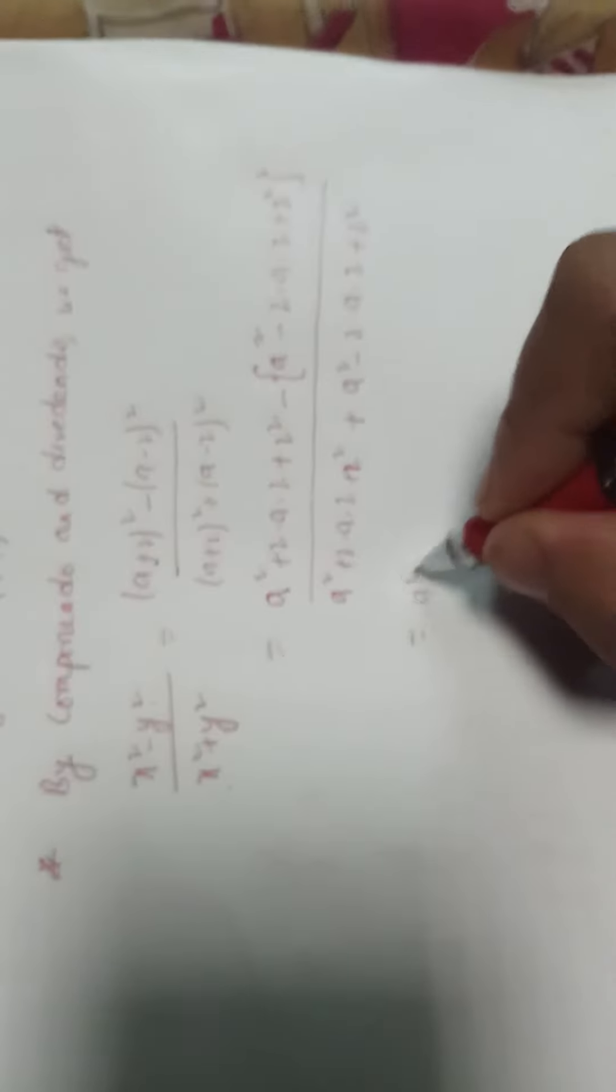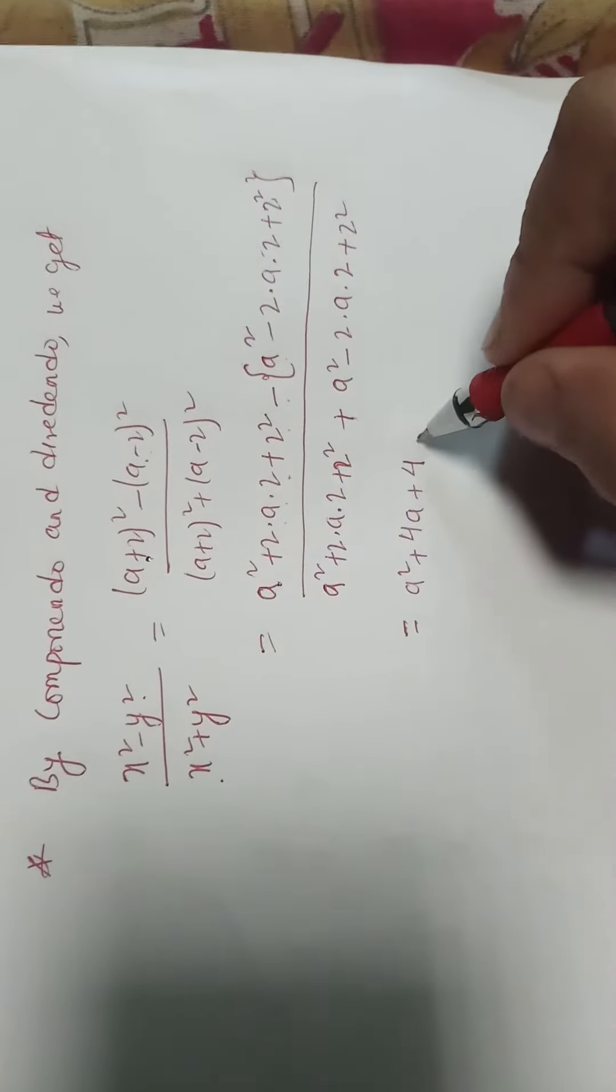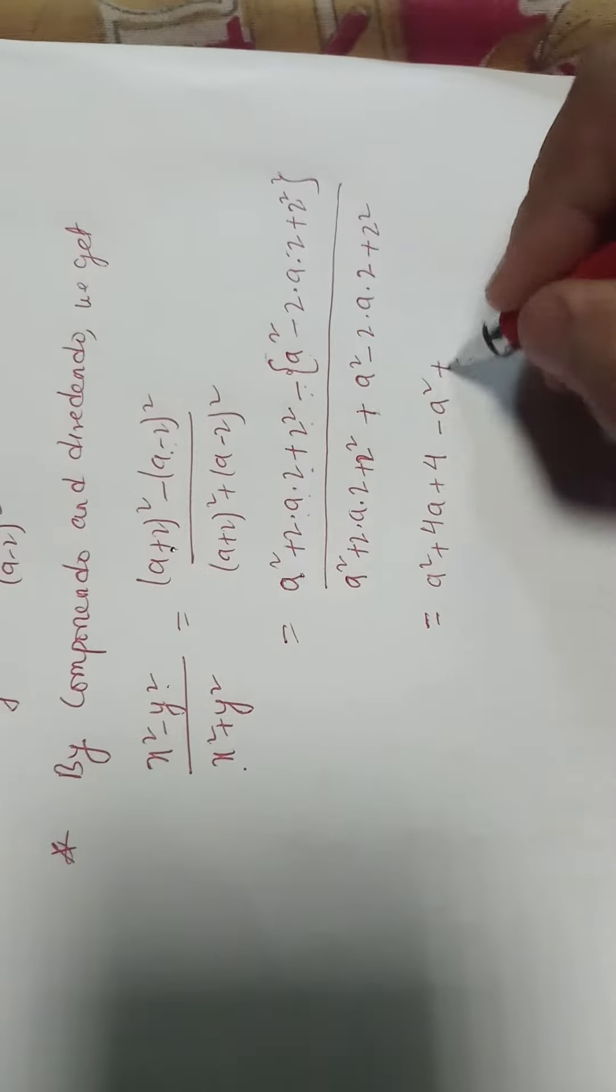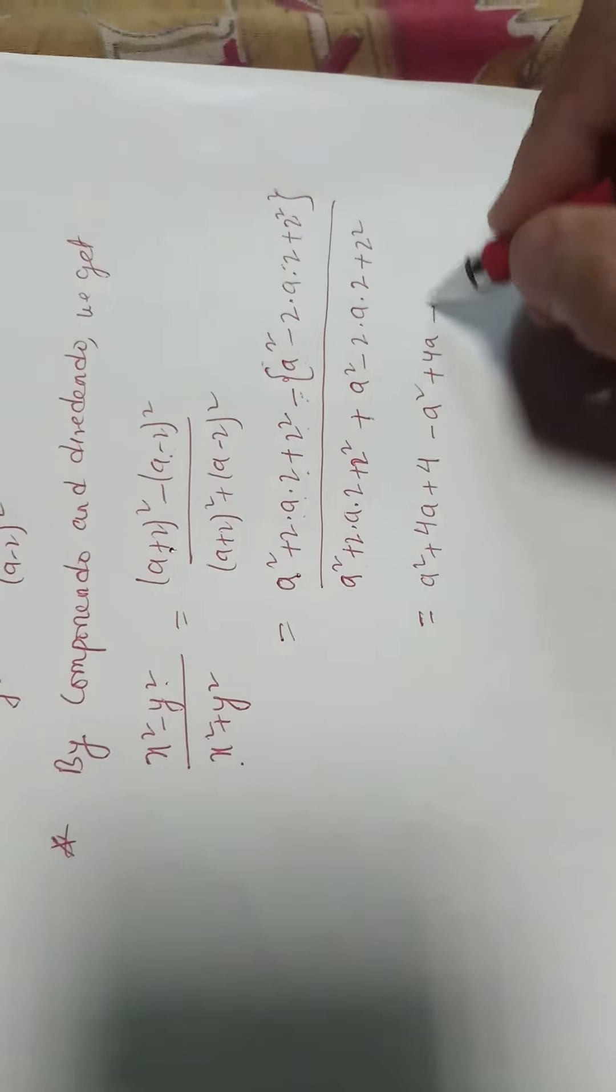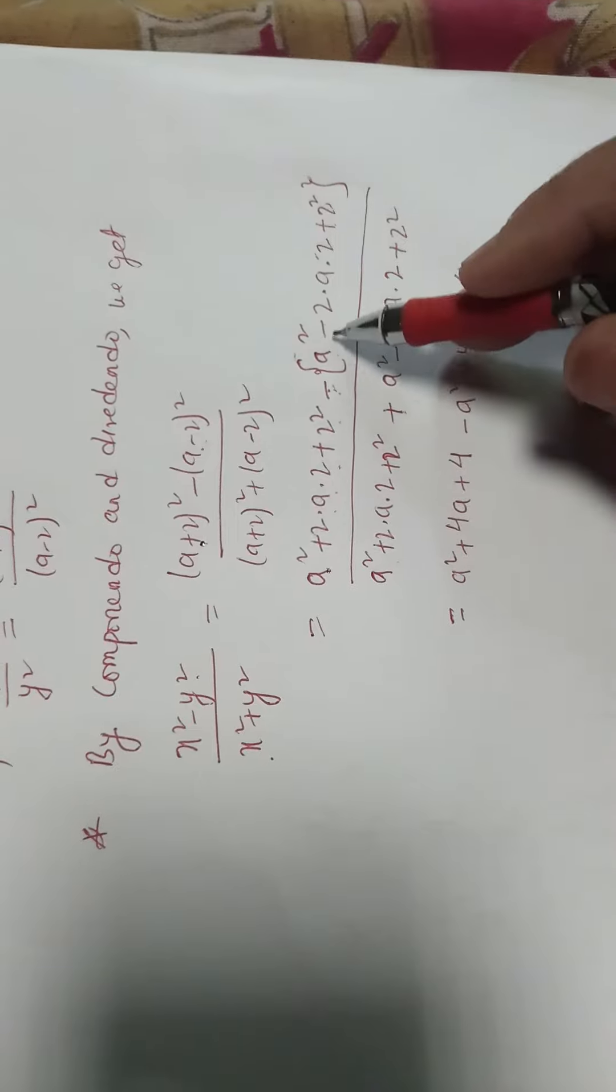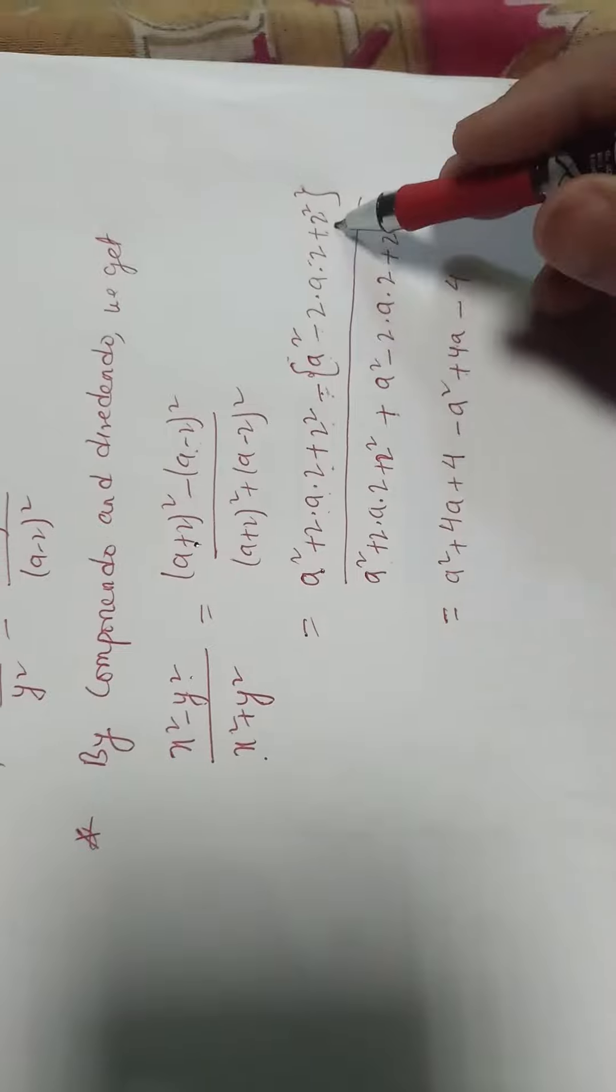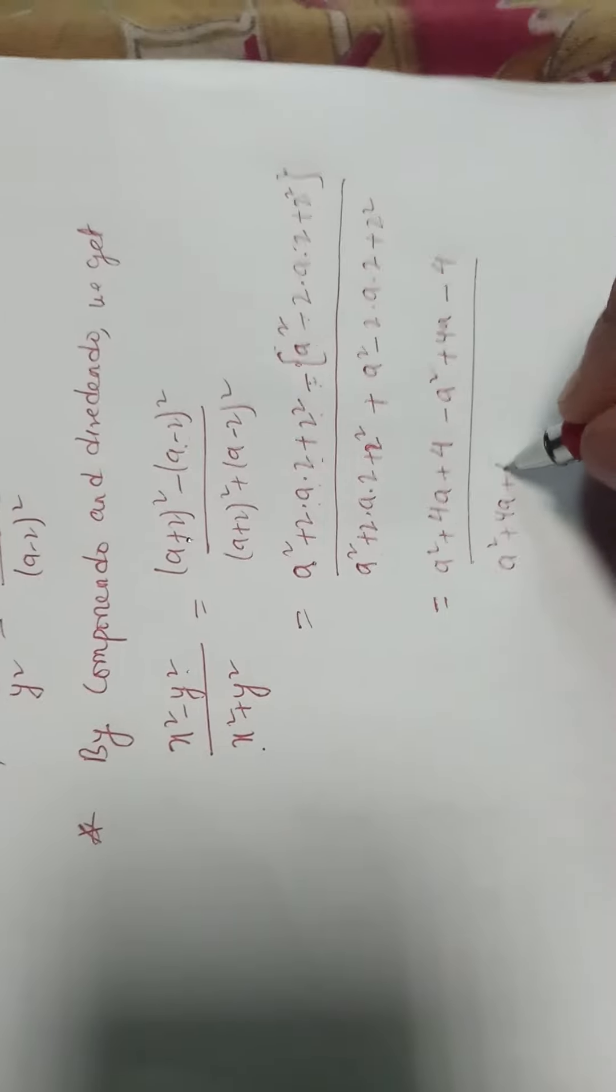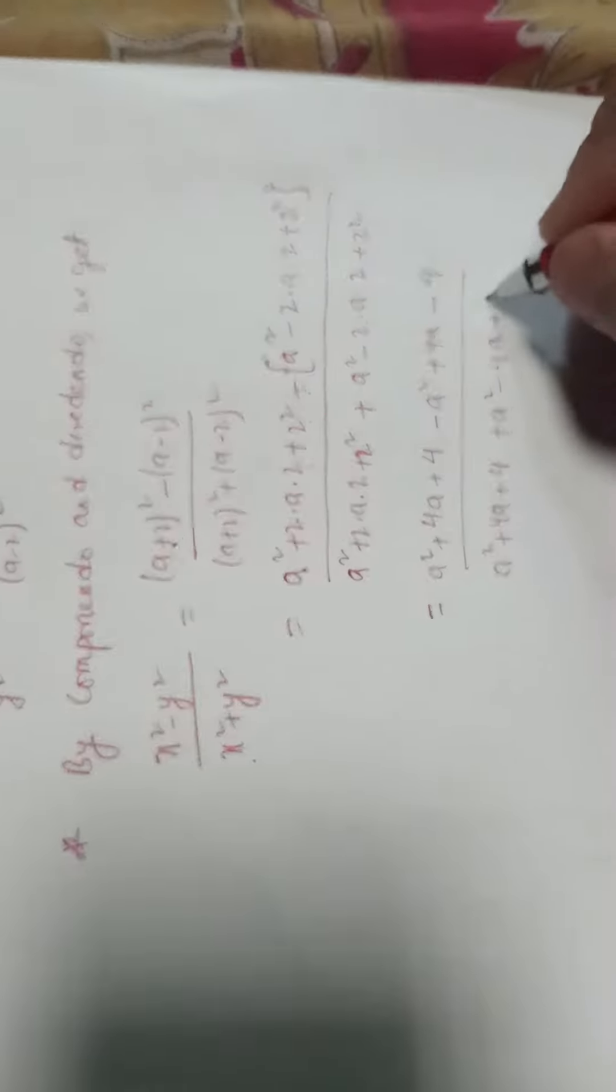Then a square plus 2, 2 is 4a plus 2 square is 4 minus a square. Then a square plus 2, 2 is 4a plus 2 square is 4. Then a square plus 2, 2 is 4a plus 2 square is 4 plus a square minus 2, 2 is 4a plus 2 square is 4.